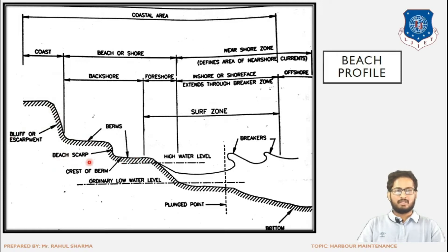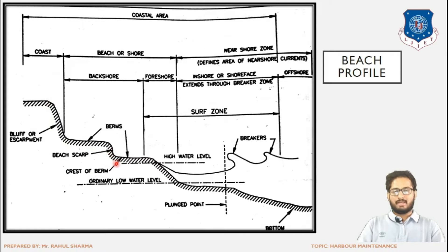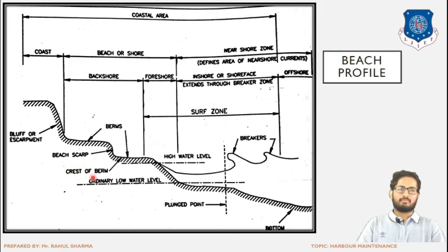There is also a scarp, which is also a slope connecting berms or two horizontal surfaces. The difference is that the scarp is of a very small height while the bluff is of a considerable height. The similarity is that both are slopes. Next, the berm crest is the topmost point of the berms.